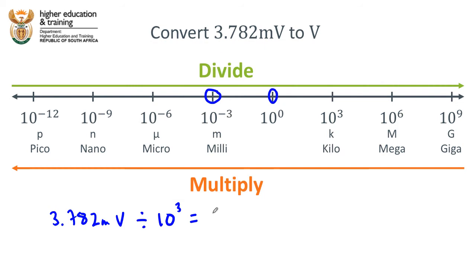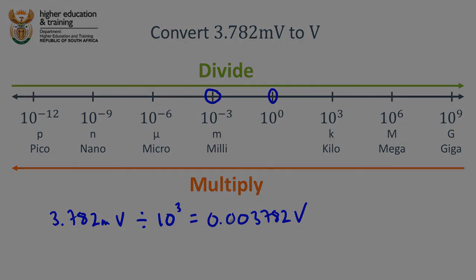So that is 0.003782 volts. We can see in this simple example why it makes sense that we have to go in the divide direction. Millivolts are smaller units than volts, so we're moving from the smaller unit to the bigger unit. We expect the actual number to get smaller, and in fact it does exactly that.